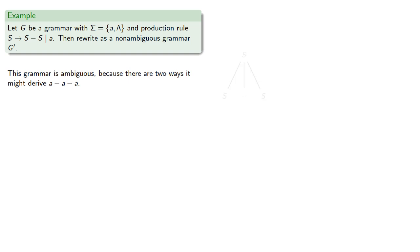For example, S might produce S minus S, and this first S could be replaced with an a, and the second could be replaced with S minus S.